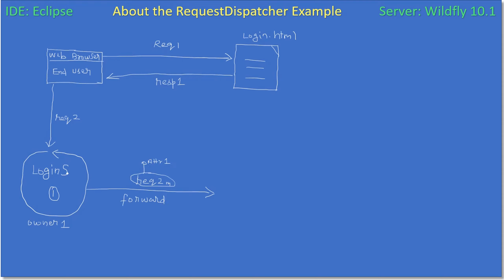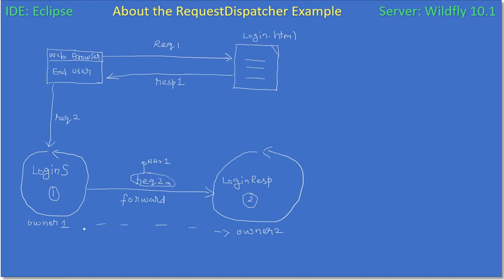In our example, from Login Servlet we will modify the incoming request and add an attribute stating whether authentication passed or failed. We will then forward this request to one more servlet. Once the request is forwarded to LoginResp2, the ownership is transferred from Owner 1 to Owner 2. Owner 2 is now responsible to process the request and send the response back to the end user. Login Servlet, which already validated the username and password, sets a result as an attribute — specifically a request attribute.